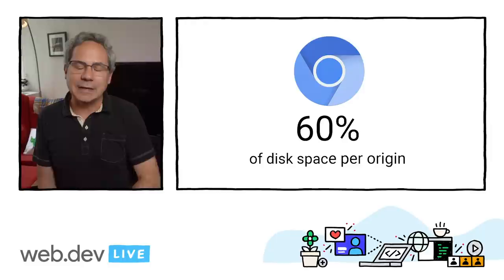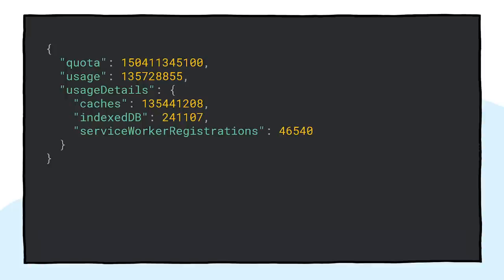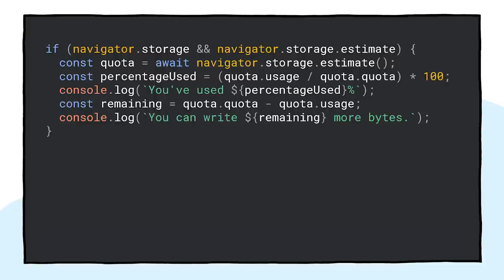It sounds complex, but there's an easy way to see what's available. In many browsers, you can use the Storage Manager API to determine the amount of storage available to the origin and how much storage you're already using. It reports the total number of bytes used and makes it possible to calculate the approximate bytes remaining. Unfortunately, the Storage Manager API isn't implemented in all browsers yet, so you must use feature detection before using it. But even when it is available, you still need to catch over-quota errors.